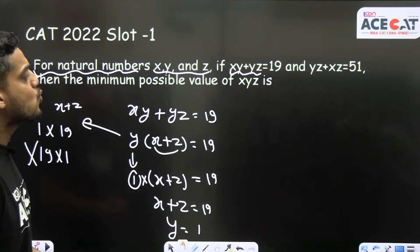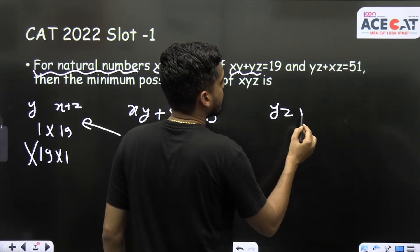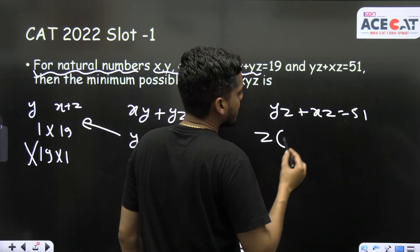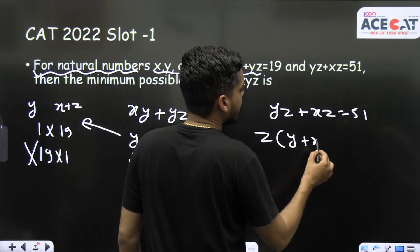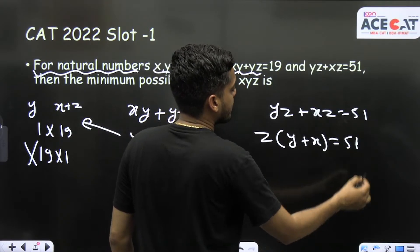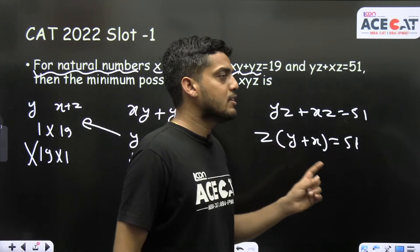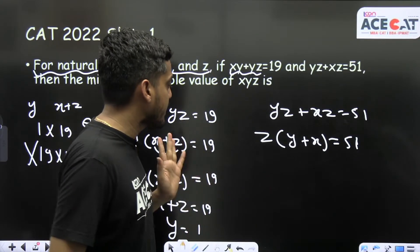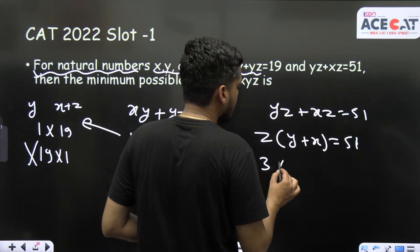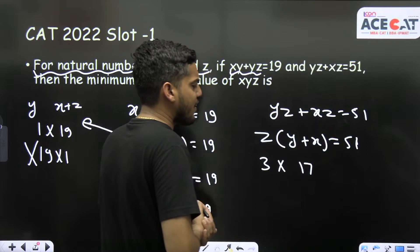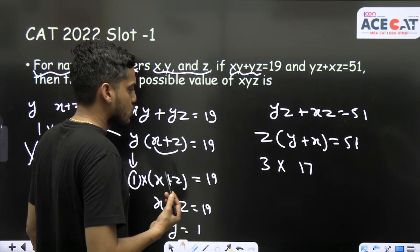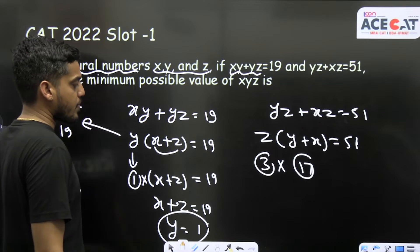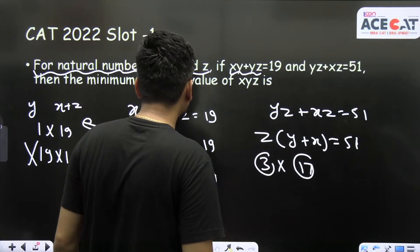The second condition is yz + xz = 51. Taking z common gives z(y + x) = 51. Now, 51 = 3 × 17. About 90% of students assumed z = 3 and y + x = 17, which satisfies this condition. So let's take z = 3 and y + x = 17.